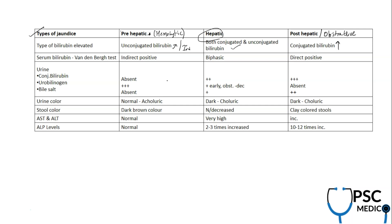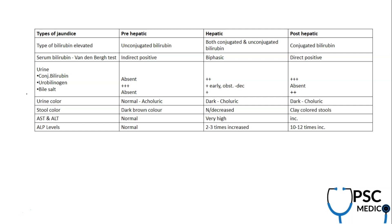The Van den Bergh test is also relevant here and could be a potential future exam question. In this test, an indirect-positive result indicates pre-hepatic jaundice, a direct-positive result indicates post-hepatic jaundice, and a biphasic result indicates hepatic jaundice. A detailed video on the Van den Bergh test is available in the video course.